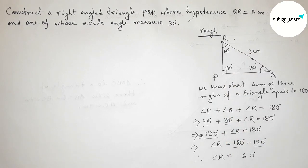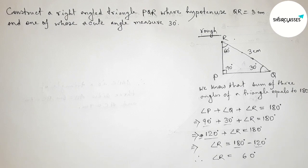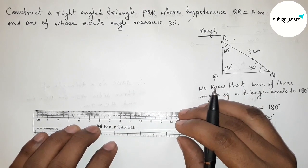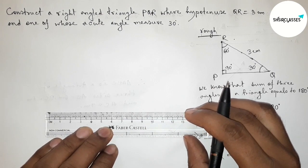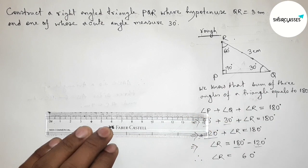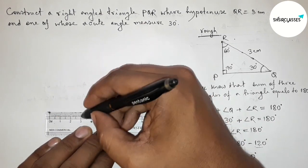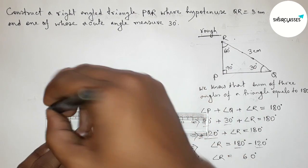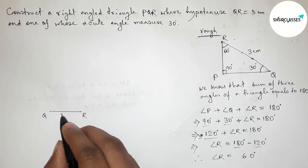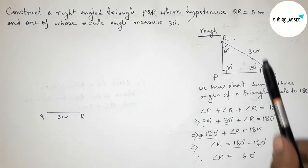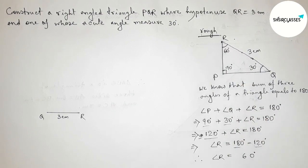Now we apply these values to construct the triangle. First, we draw the hypotenuse QR = 3 centimeters. Drawing a 3-centimeter line segment, marking point Q on one end and point R on the other. So QR = 3 centimeters.